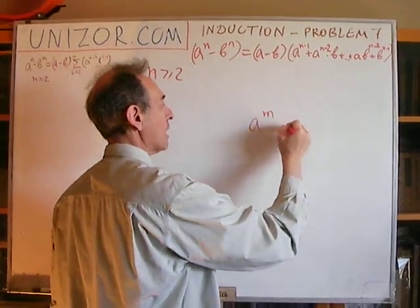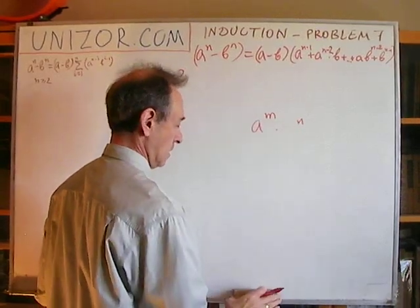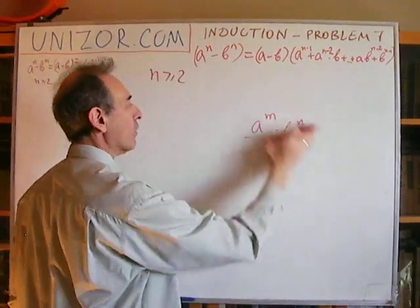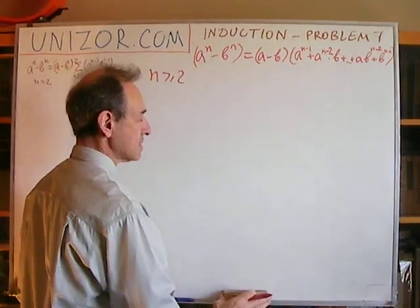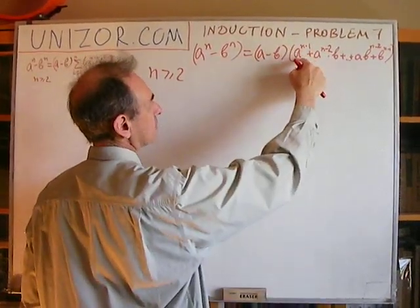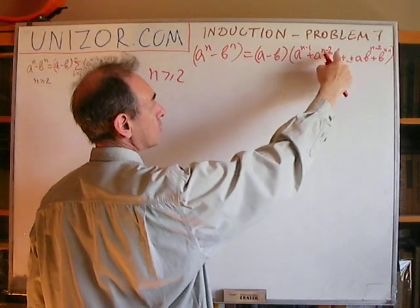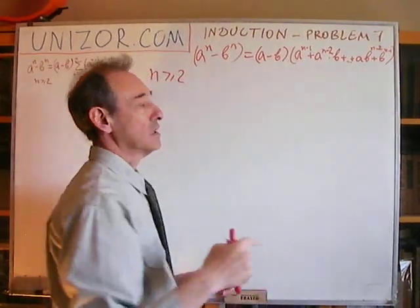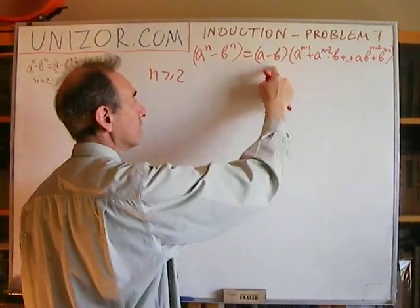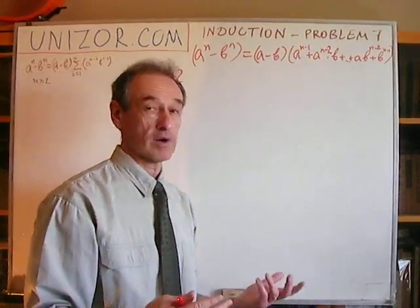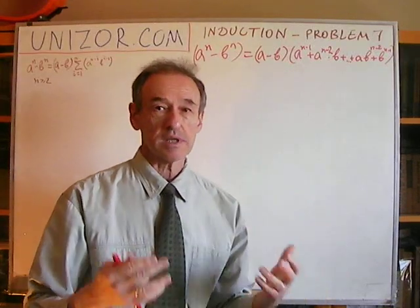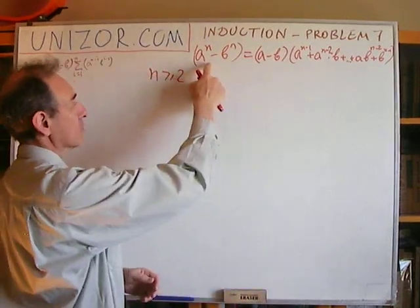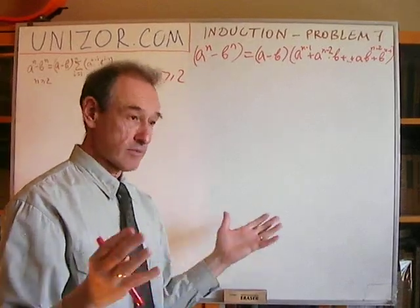This makes the whole multivariate polynomial — in this case two variables a and b — have every element with power equal to n minus 1, since a to the m times b to the n has power m plus n. The whole polynomial is of power n minus 1, while a minus b is a polynomial of power 1. When we multiply two polynomials, powers add together, so 1 and n minus 1 gives n — exactly the power of the original expression. Everything fits.